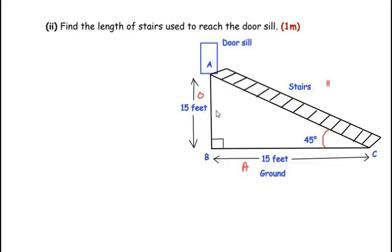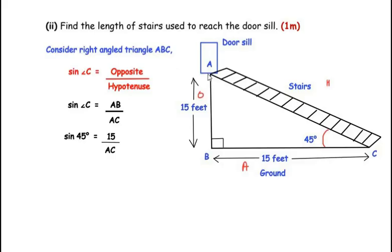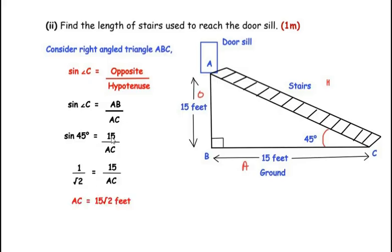Considering right-angled triangle ABC: sin(C) = opposite/hypotenuse = AB/AC. With angle C = 45°: sin(45°) = 15/AC. Since sin(45°) = 1/√2, we get 1/√2 = 15/AC. Cross-multiplying: AC = 15√2 feet. This is the length of the stairs used to reach the dorsal.